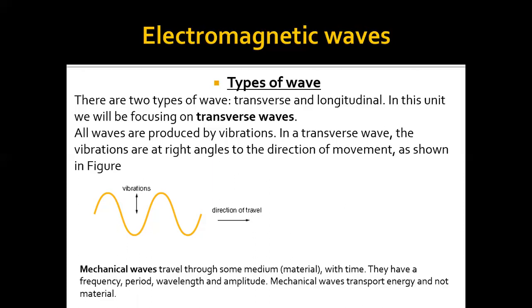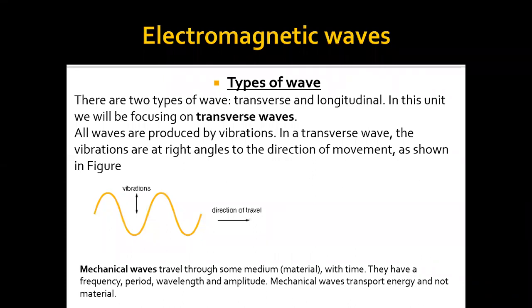We have mechanical waves and electromagnetic waves. Let's first define mechanical waves. Mechanical waves travel through some medium — that means they need a material to travel through. They have frequency, period, wavelength, and amplitude, but they do not carry material; they just carry energy. They flow through materials.